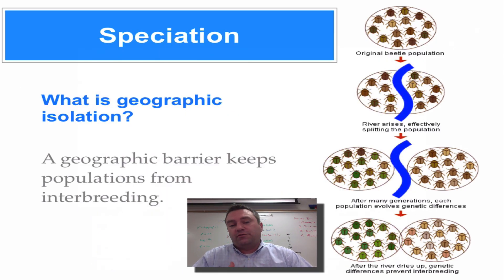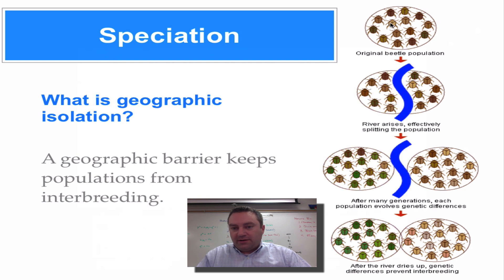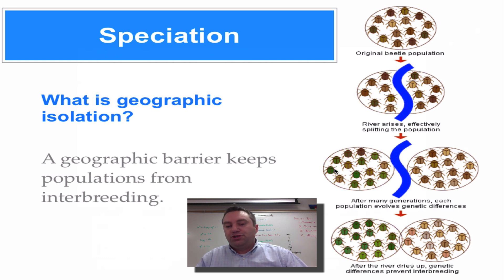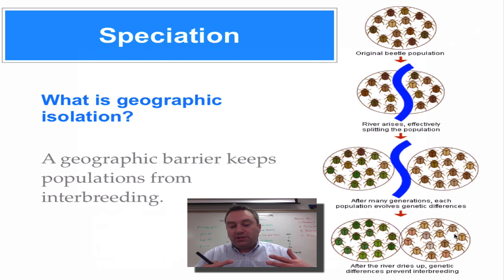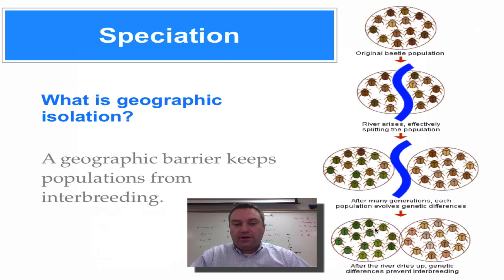Geographical isolation occurs when a geographic barrier separates one population from another. In this example, we have a population of beetles in various colors — green, dark brown, light brown. A river forms and separates the two populations; the beetles can't swim across, so they can no longer intermate. Over time, selection pressure acts differently on each side — green beetles thrive on the western side with more foliage, brown beetles thrive on the sandier eastern side. When the river dries up, the populations can mix again, but they've developed their own reproductive isolation and will not mate with each other — forming a brand new species.